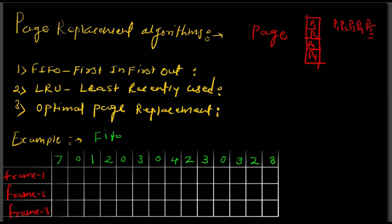We will start with the FIFO algorithm. These algorithms require a memory size — here we have taken a size of three frames: frame one, frame two, and frame three. The page reference string gives the page numbers in the order required by the processor: first is 7, then 0, 1, 2, 0, 3, and so on. This page reference string and memory size of three are the inputs.